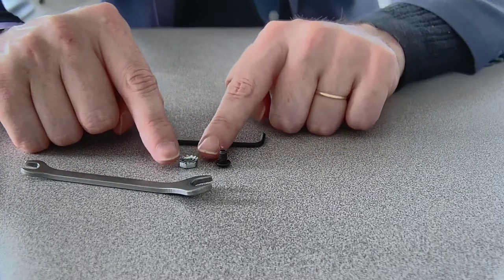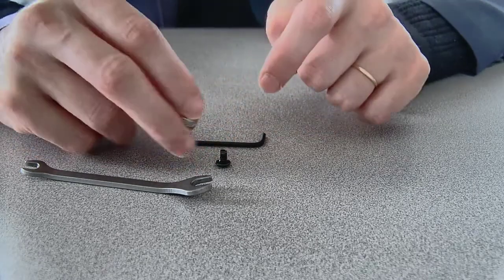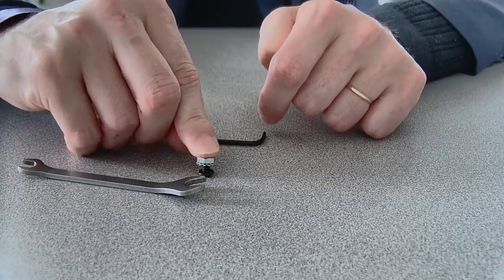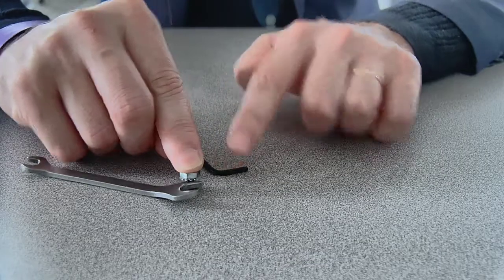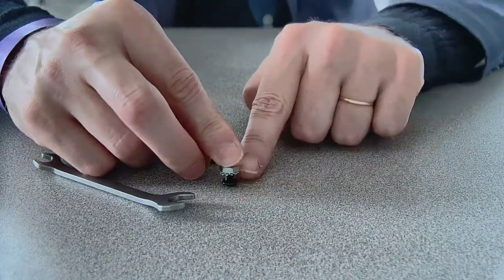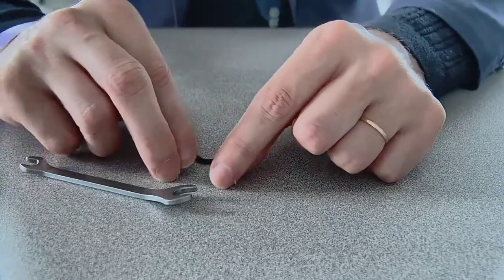This is called a Keps nut and it's special because it's got this little gear looking thing on one side. You always want to screw the gear looking thing in so it's facing the head of the bolt. When it presses against the metal, this little gear thing keeps the nut on there nice and tight.